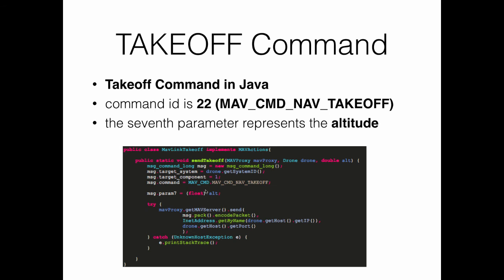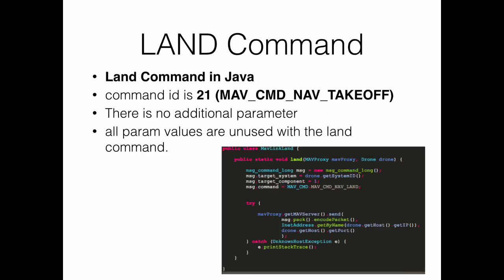This slide shows an illustration of the land command. The message type is also msg_command_long, and the command type refers to the constant for land, corresponding to value 21. There is no additional parameter that needs to be set. When this command is sent to the copter, it will execute the land command and the copter will land.